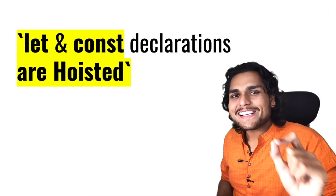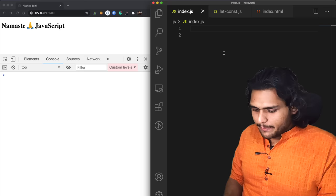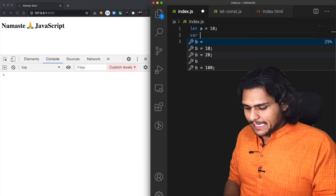I know it sounds complicated — temporal dead zone — but don't worry, we will see what it is in detail. Let's go ahead in the code. So let us now take a variable: let a = 10.